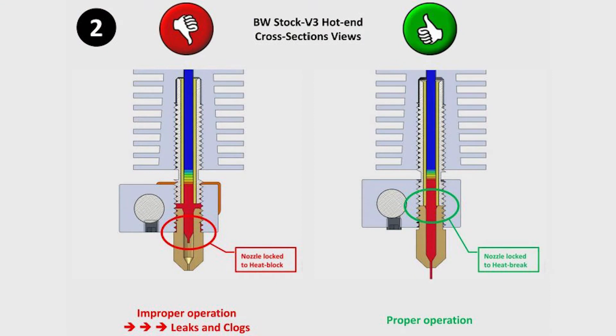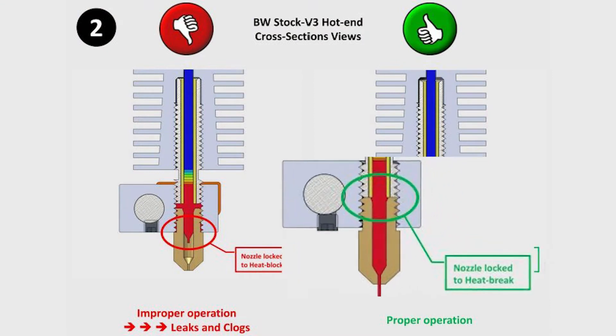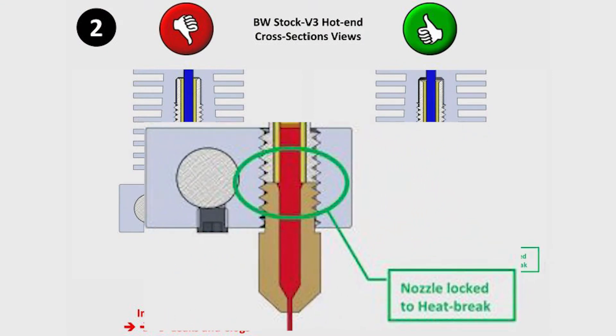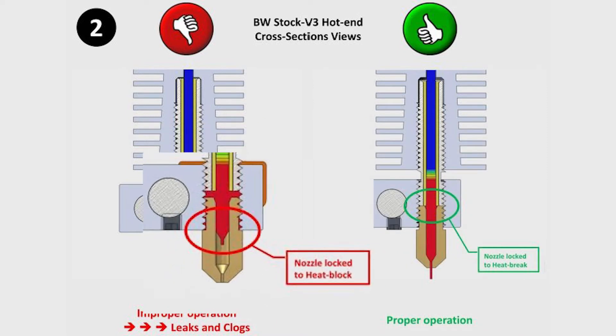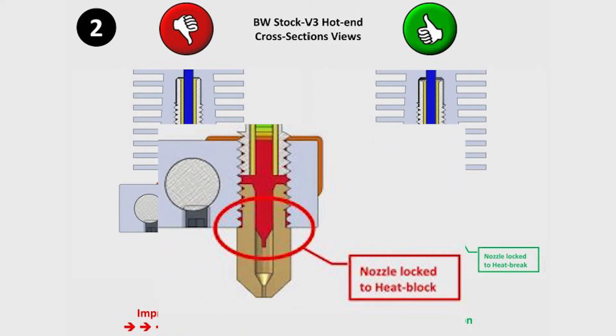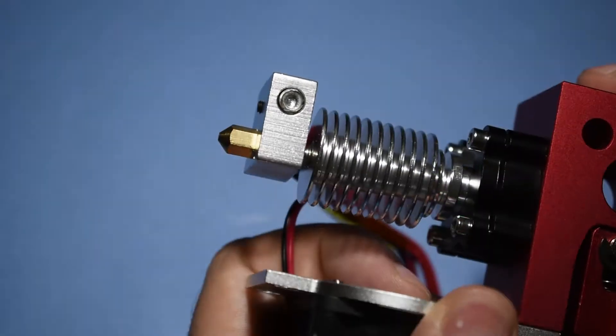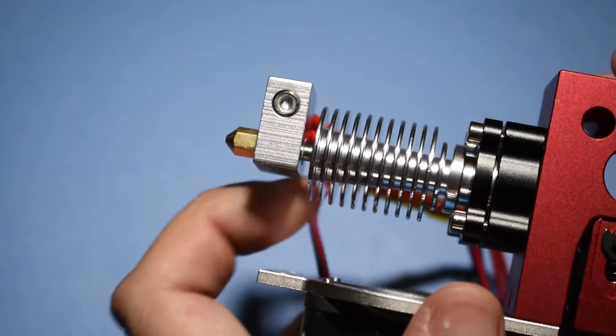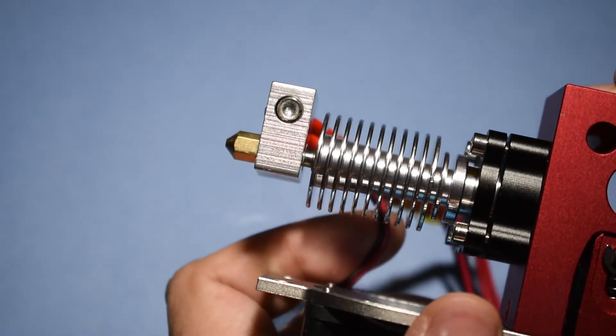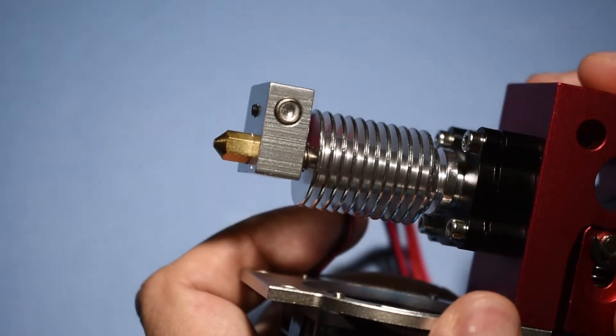You need to make sure that the nozzle is tightened against the heat break and not the heat block. Otherwise, you will end up with leaks and clogs due to the gap between the nozzle and the heat break. In this example, the nozzle is clearly tightened against the heat block and most probably there is a gap between the nozzle and the heat break.